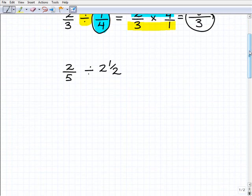Let's take a look at one other example. Here I have 2 fifths divided by 2 and 1 half. So, how do I deal with the 2 and 1 half? Anytime you're dealing with mixed numbers, I strongly suggest that you turn them into an improper fraction. So, let's just do that off to the side. 2 and 1 half. I can write that as 2 times 2, which is 4 plus 1, or 5 halves.